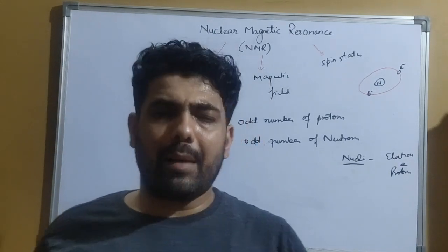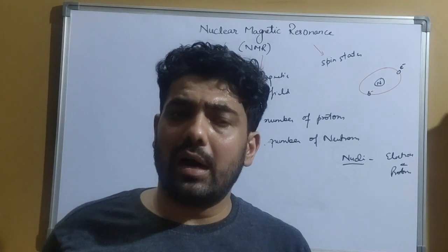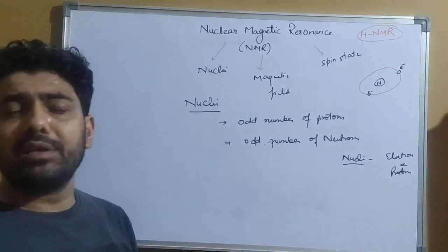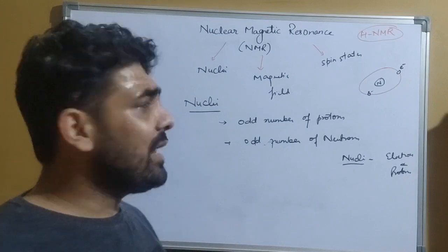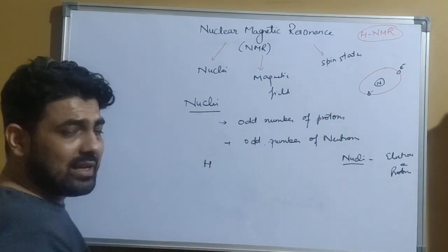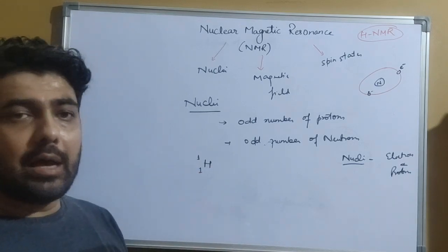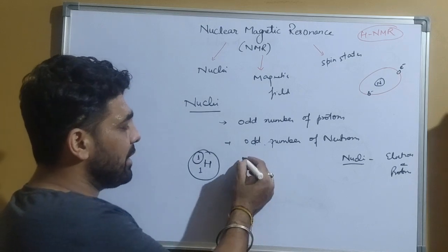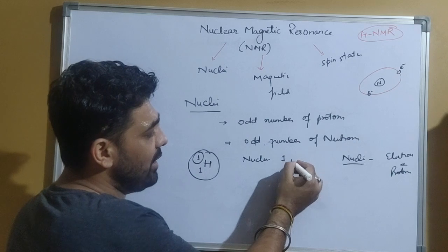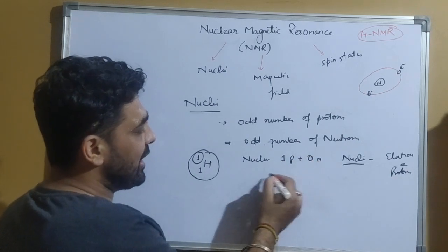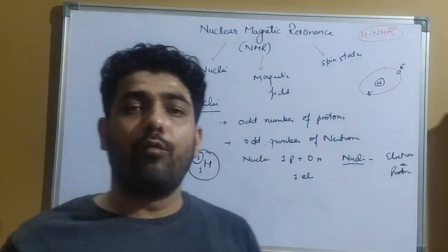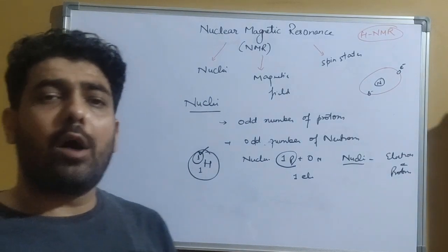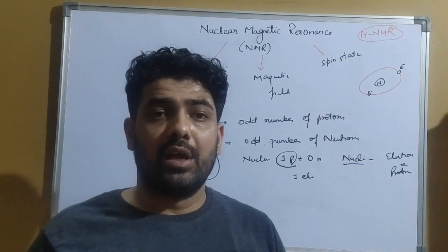When we talk about NMR, for understanding purposes we typically use hydrogen NMR, also referred to as H-NMR. In H-NMR, we focus on the hydrogen atom or the hydrogen nuclei in the sample. The most common form of hydrogen has molecular weight 1 and atomic number 1, meaning its nucleus has one proton and zero neutrons, with one electron. Since its nucleus has only one proton — which is an odd number — it can be used in NMR studies and NMR experiments.